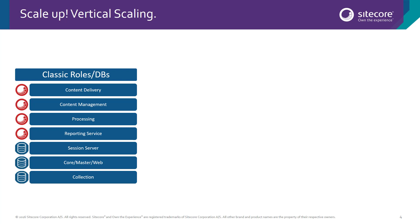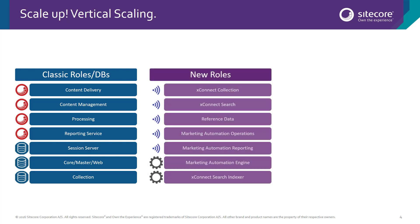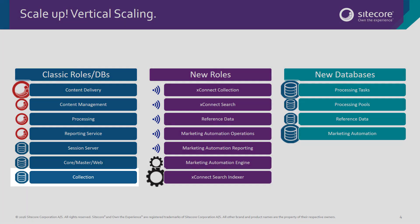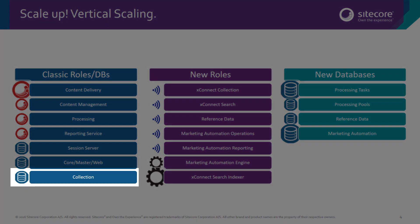So what's changed? With Sitecore 9, the traditional roles and databases are still there and can be scaled up just as you did before. However, the platform has greatly expanded the number of applications and databases that can be scaled up to support the new Experience Platform Foundation. This gives you more fine-grained control over where you want to add your additional resources. Special note: CollectionDB is now supported in SQL Server, and this means teams familiar with SQL Server's vertical scaling can bring this knowledge to scaling the Collection Database.